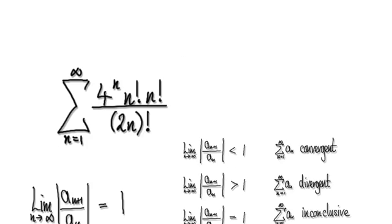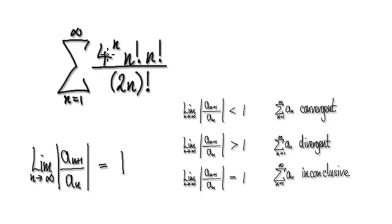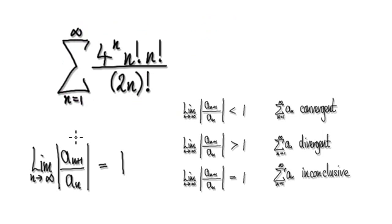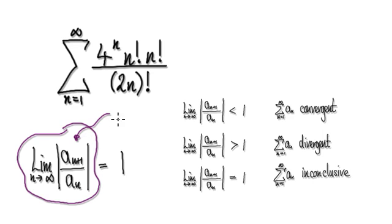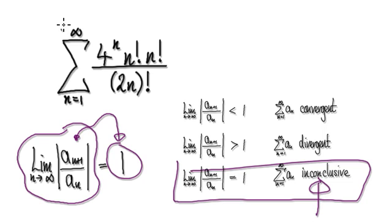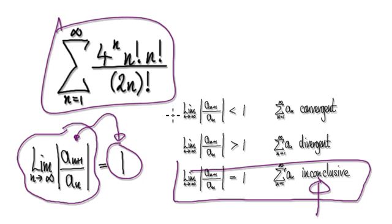Following on from the previous video, we were trying to determine if this series will converge or if it will diverge, and we used the ratio test. When it comes to the ratio test, we always need to know this value here. As it turns out, this value equals 1. When it equals 1, then it's inconclusive, meaning that we can't tell if this is going to converge or if this is going to diverge.